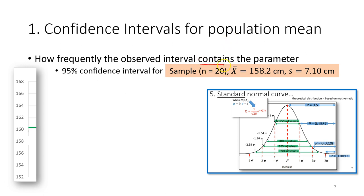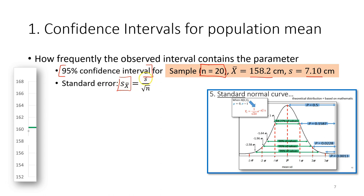Our sample consists of 20 observations. This is the mean of the sample and this is the standard deviation of the sample. We want to calculate a 95 percent confidence interval for the sample, which means how frequently the observed interval contains the parameter. First we need to calculate the standard error — the standard error is the dispersion measure of the distribution of sample means. We take the standard deviation of the sample, which is 7.10, divided by the square root of 20, and we get the value for standard error.